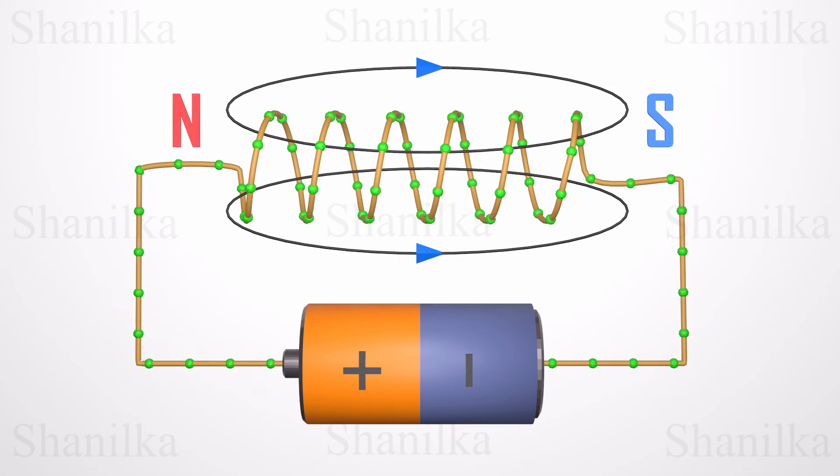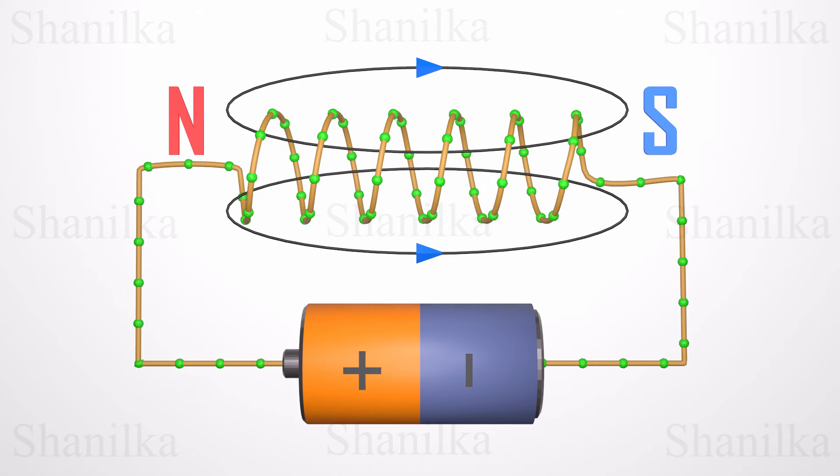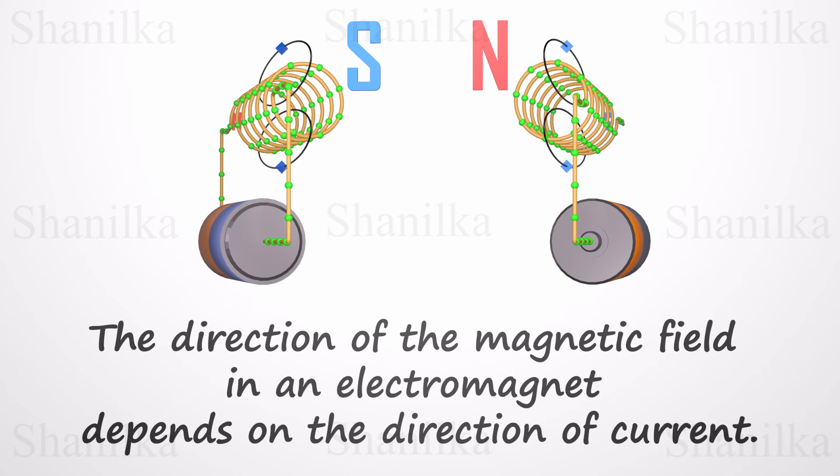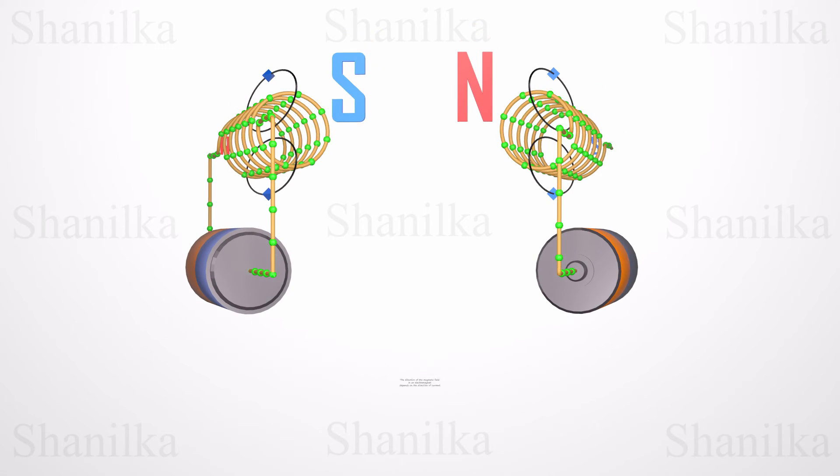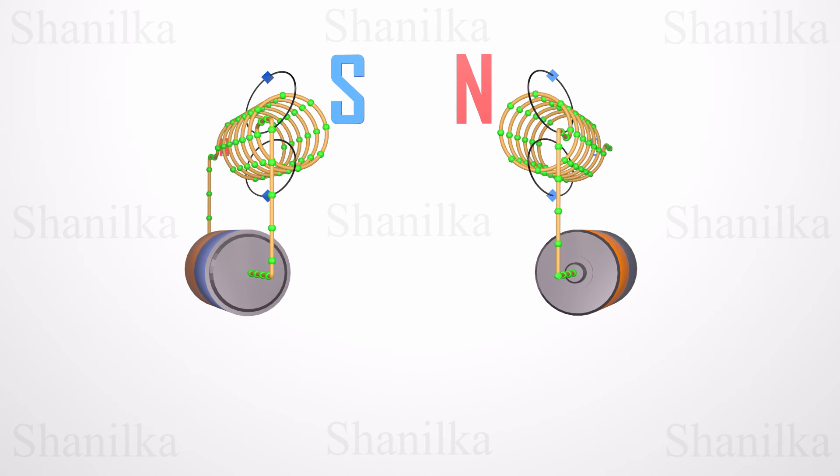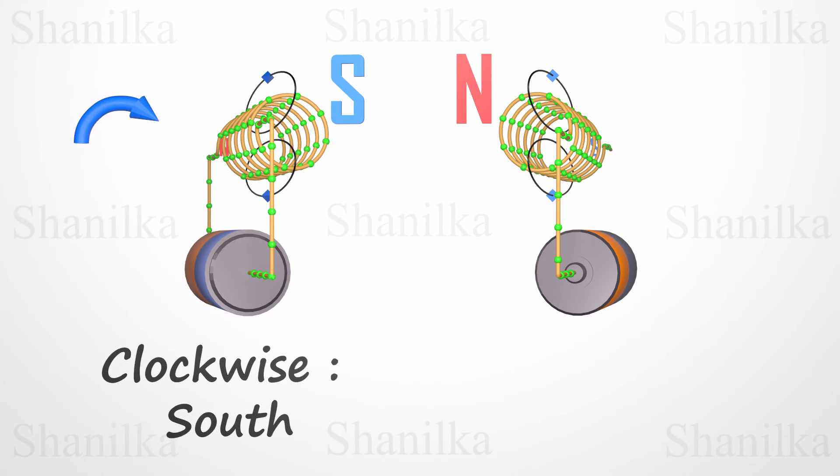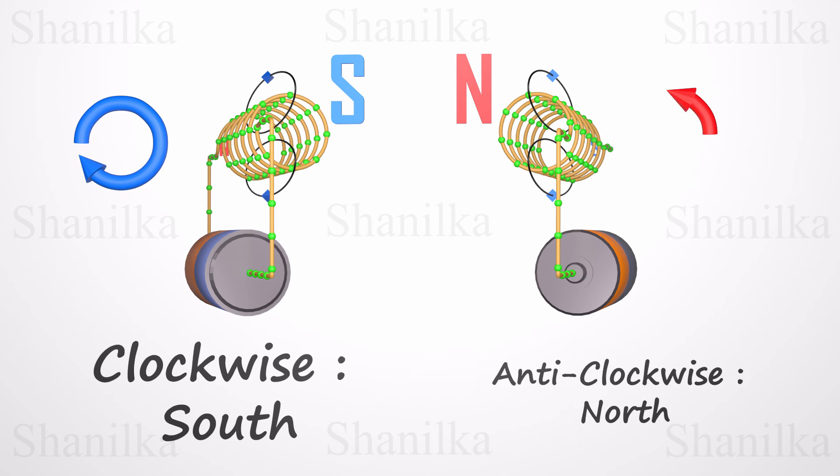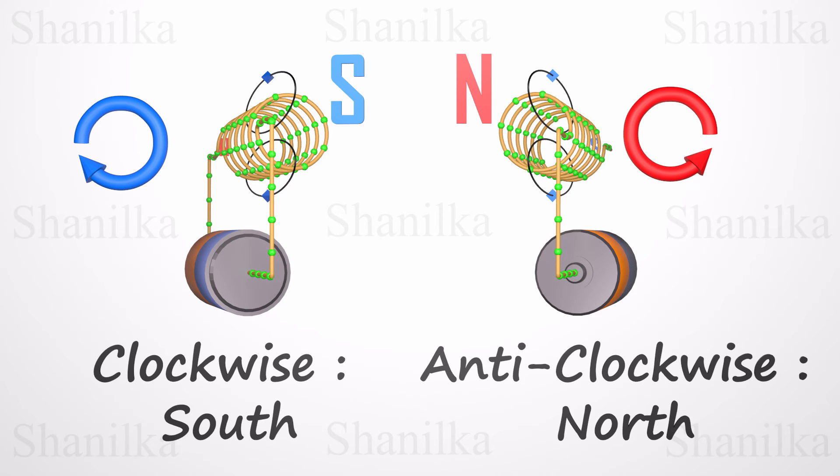Electromagnets also have magnetic poles. The direction of the magnetic field in an electromagnet depends on the direction of the current. There is a simple method to identify the two poles of an electromagnet. If the electricity travels clockwise around the electromagnet, then the end you are looking at is the south pole. If the electricity travels counter-clockwise around the electromagnet, then the end you are looking at is a north pole.